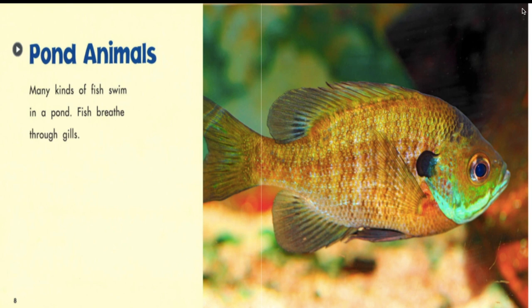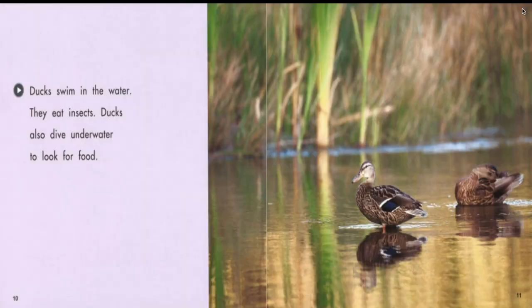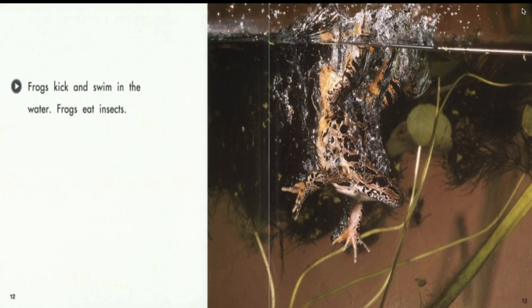Pond animals. Many kinds of fish swim in a pond. Fish breathe through gills. Ducks swim in the water. They eat insects. Ducks also dive underwater to look for food. Frogs kick and swim in the water. Frogs eat insects.